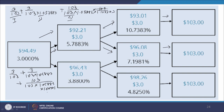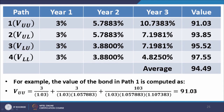We similarly compute the valuation for path 3 and path 4. Finally, we take an average of all four path values to arrive at V0, the value of the bond at t=0. The four path valuations are computed as shown, and their average gives the final bond value, which is the same result as backward induction.